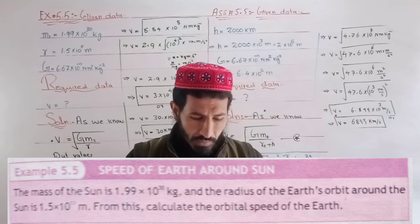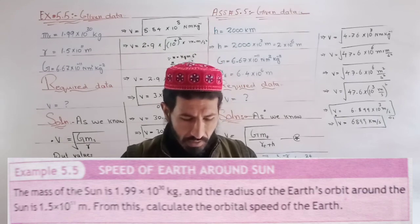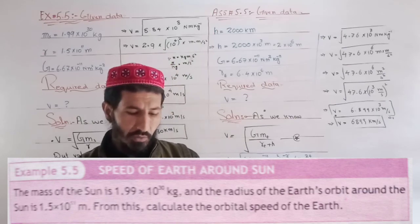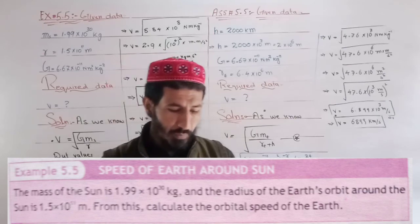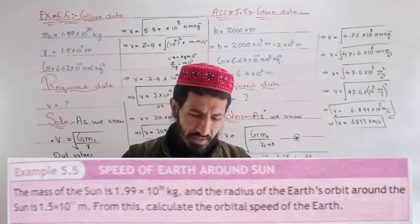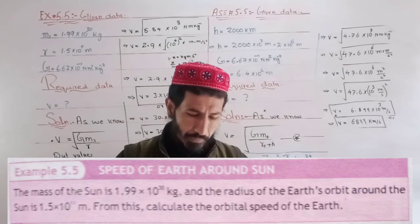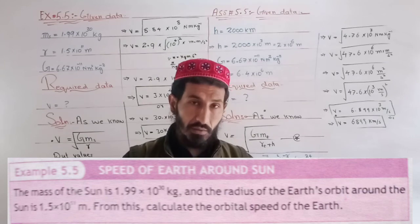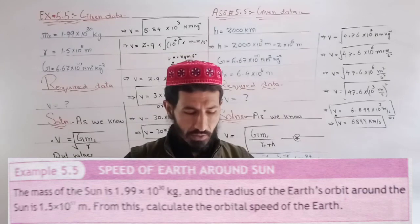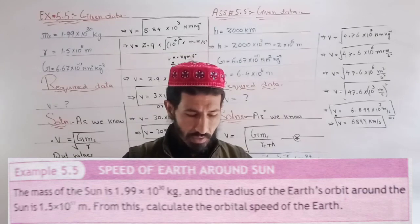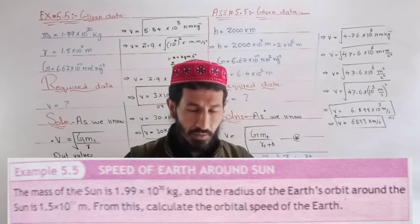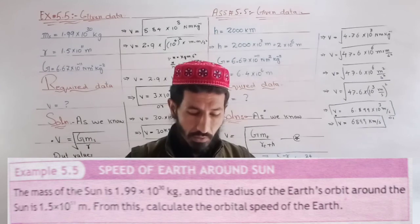From this, calculate the orbital speed of Earth. The radius of Earth's orbit is 1.5 × 10^11 meters.